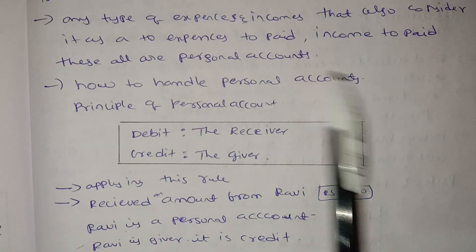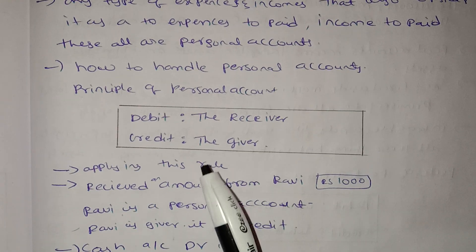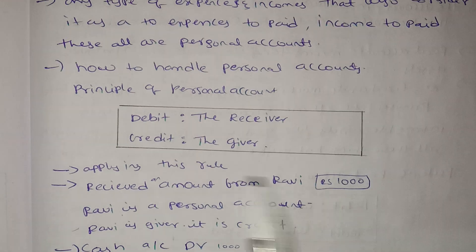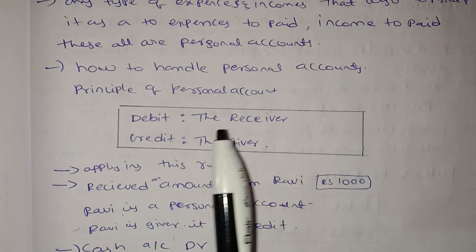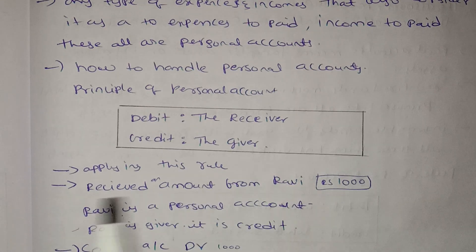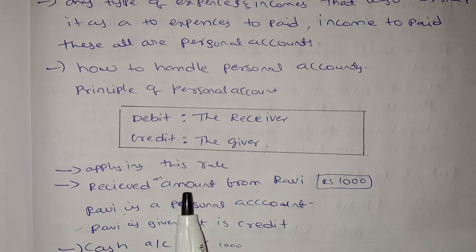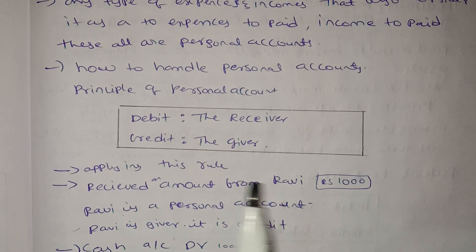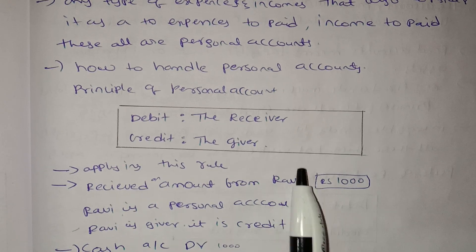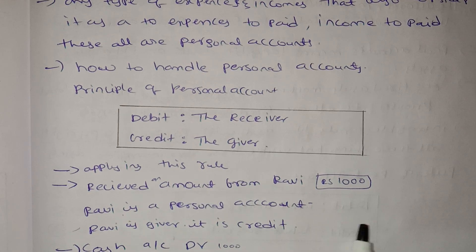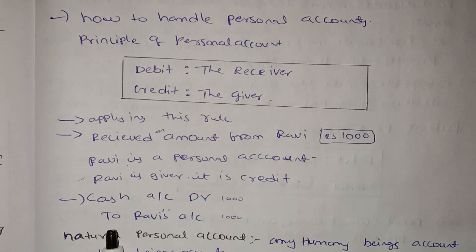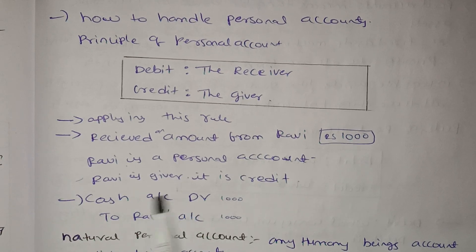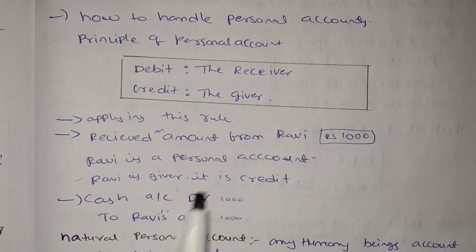The principle of personal account: how to handle a personal account. The rule is: the debtor is the receiver, and the creditor is the giver. For example, we received an amount from Rabi. Rabi is a personal account. Rabi is the giver, so it is a credit. Cash account is debited because cash is the receiver.